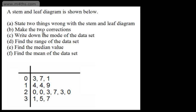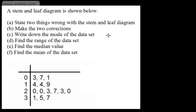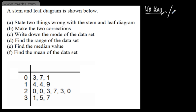Let's look at some questions. A stem and leaf diagram is shown, and part A asks us to state two things wrong with it. The first thing is that there is no key. Also, it's not ordered — for example if the key were 0/3 equal to 3, we'd have 3, 7, 1 in the first row, and then 20, 20, 23, 27, 23, 20 in another row. So the two problems are: no key, and not ordered.